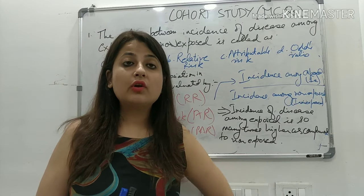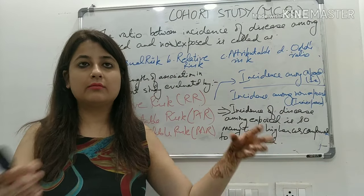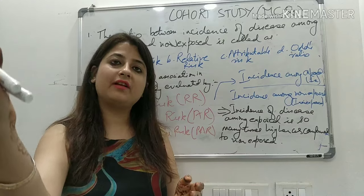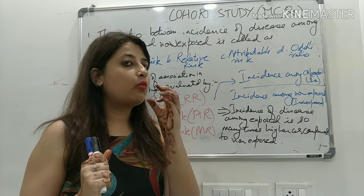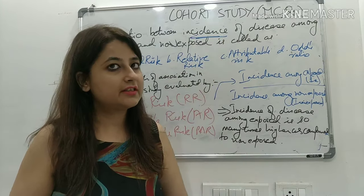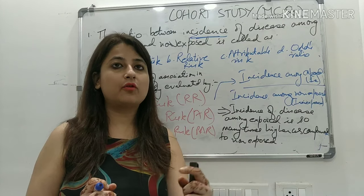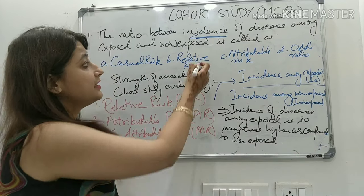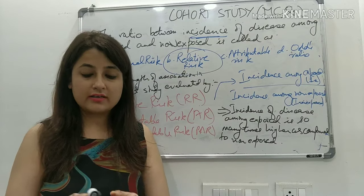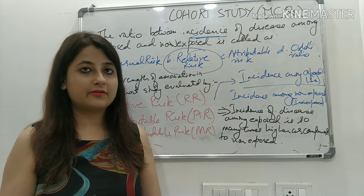Cohort study determines exposure versus outcome. Those exposed to a particular factor and those not exposed are divided into two groups; we see how many develop the disease and how many do not. So we are finding out new cases — the incidence of a disease. The factor that measures this incidence is relative risk. Strength of association in a cohort study is given by three factors: relative risk, attributable risk, and population attributable risk.